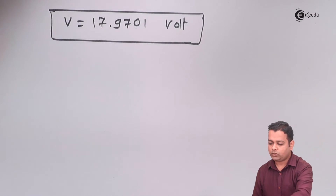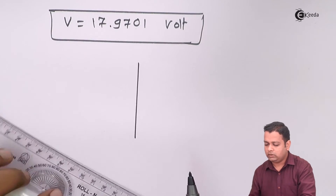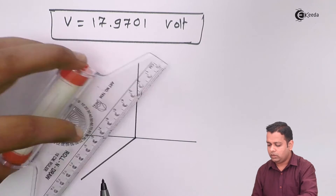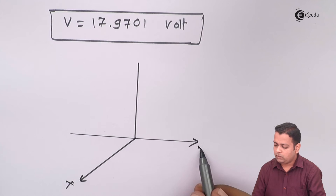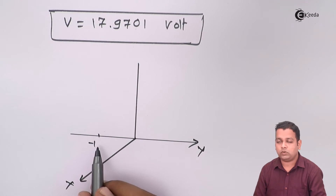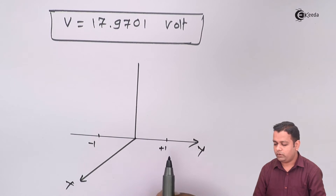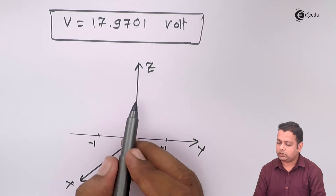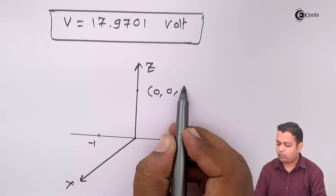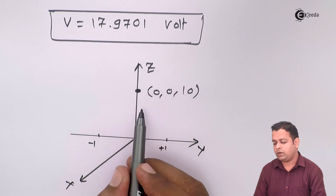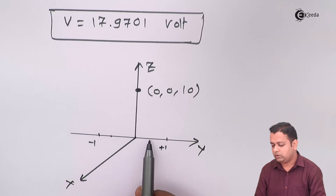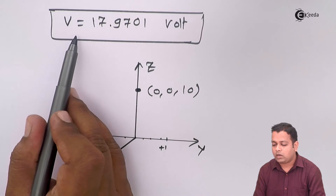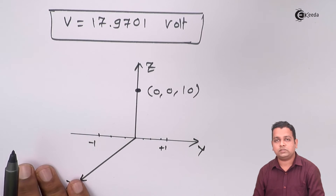This potential can be seen in a diagram: this is the z-axis, this is the y-axis on both sides — negative and positive — and this is the x-axis. Let us take minus one on y and plus one on y. From minus one to plus one, there was the charge configuration, and on the z-axis the field point is situated at (0, 0, 10). At this field point, because of differential charges distributed along the entire range minus one to plus one, we integrated and obtained V = 17.9701 volts.